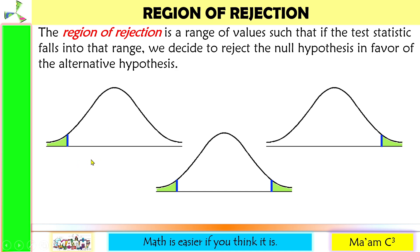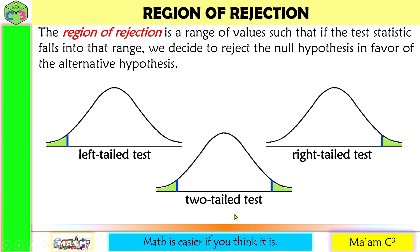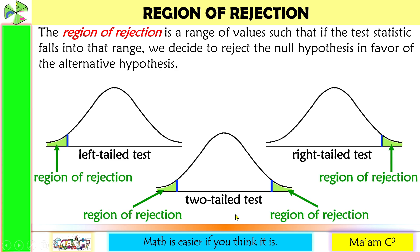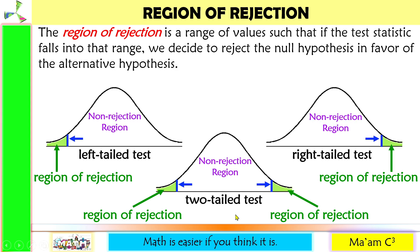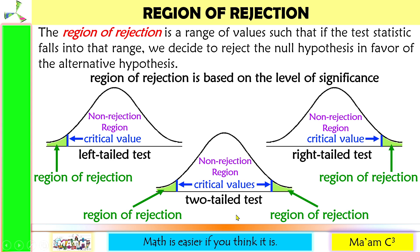This is a figure for a left-tailed test, this is for a right-tailed test, and this one is for a two-tailed test. The shaded regions are what we call the region of rejection. The unshaded region is the non-rejection region. And the blue lines are what we call the critical values. The region of rejection is based on the level of significance — alpha for left-tailed or right-tailed test, and alpha over two for two-tailed test.